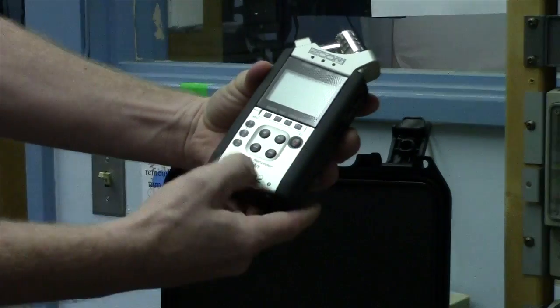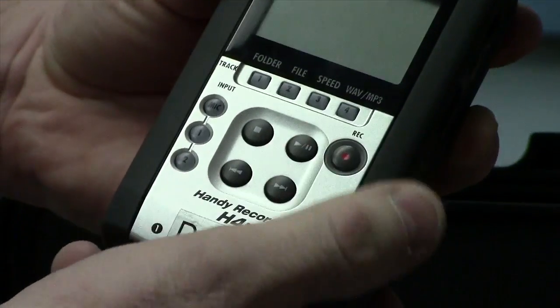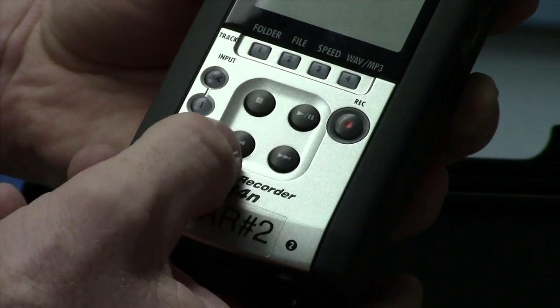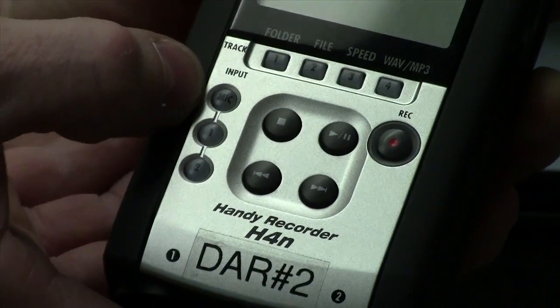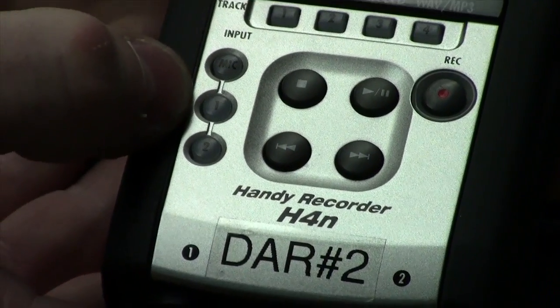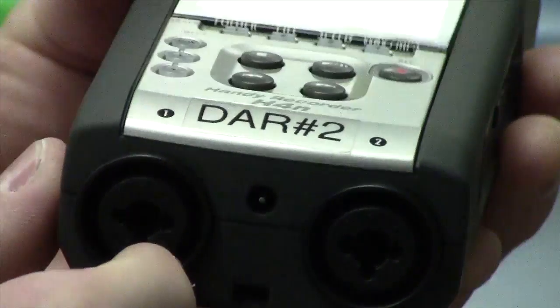On the front there are some basic buttons largely record and stop, play or pause, skip track and back track and then the input sources between mic which are these up here and then input one and two which are the cable connectors down here which we'll be using today.